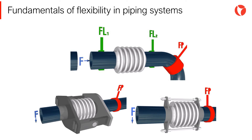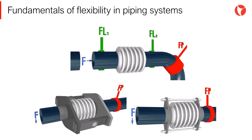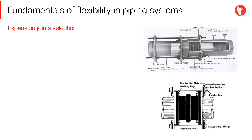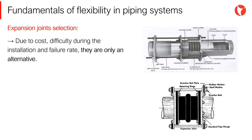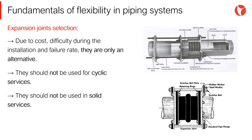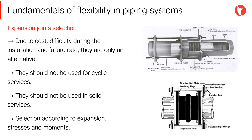Expansion joints have several moving parts and their main advantage over expansion loops is the reduced installation space required. Due to the high cost, difficulty in handling and installation, and high probability of failure, expansion joints should be used as the last resort to add flexibility to a system. Likewise, the use of expansion joints is not recommended in severe cyclic conditions, or in services which can solidify such as liquid sulfur, very heavy crude, etc. Finally, the selection of expansion joints is made according to the expansion, stresses and movements in the line.